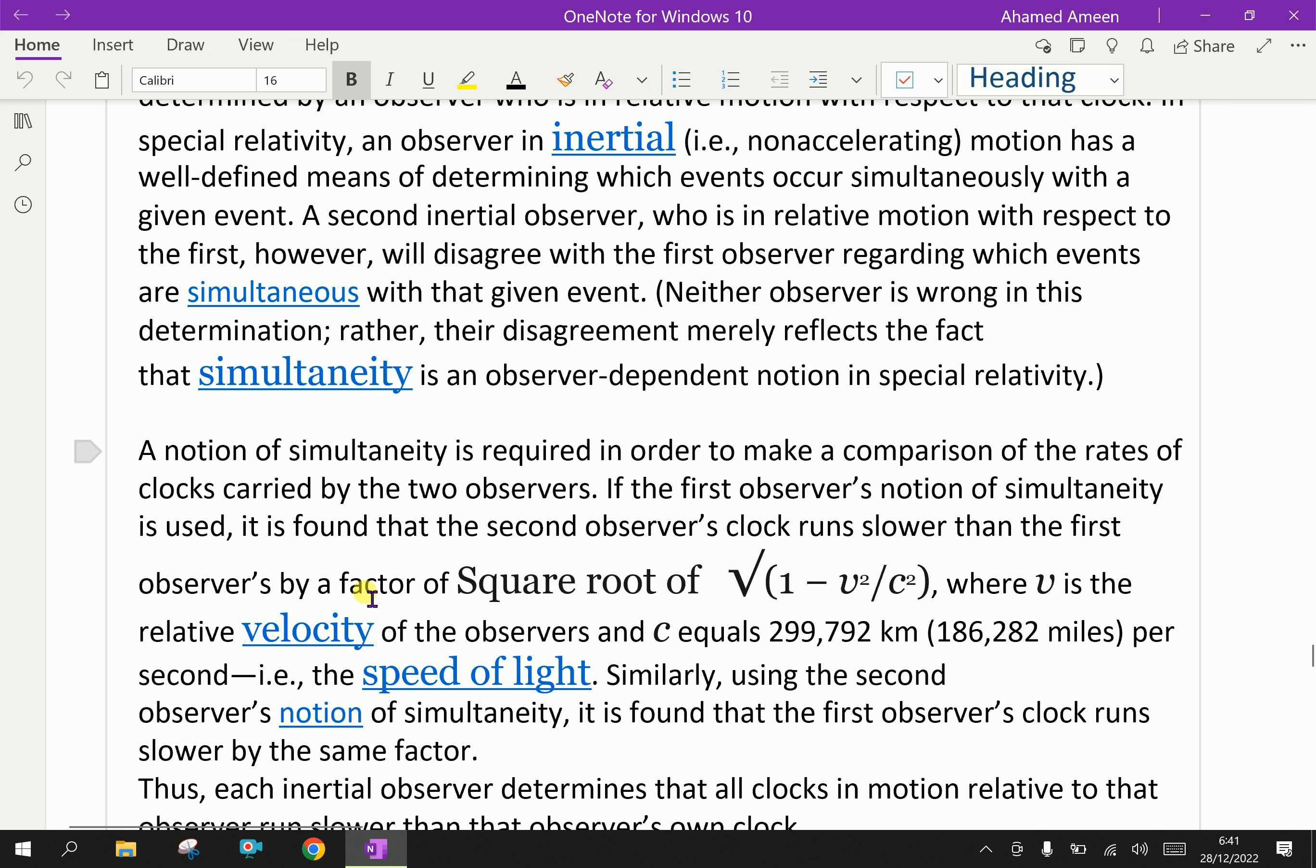Here, measurement of time intervals are affected by relative motion between an observer and what is observed. As a result, a clock that moves with respect to an observer ticks more slowly than it does without such motion. And all processes, including those of life, occur more slowly to an observer when they take place in a different inertial frame.